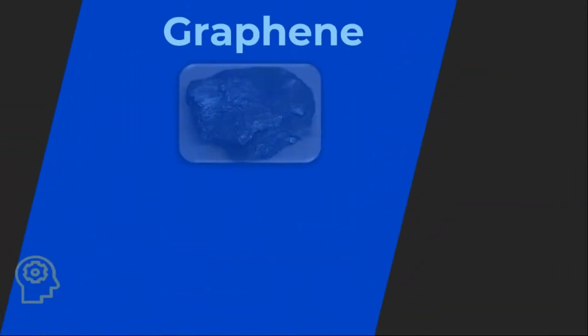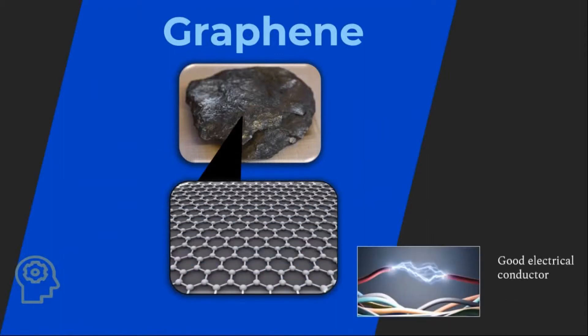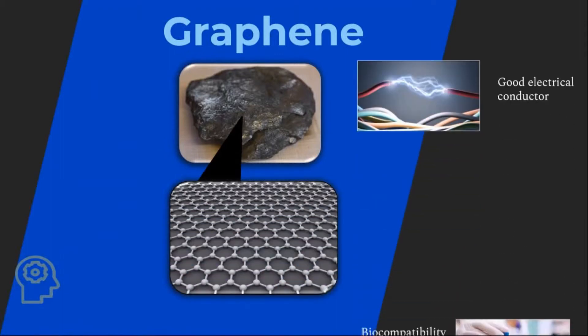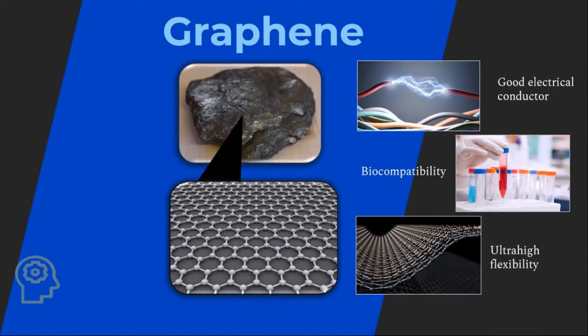Graphene is formed by carbon atomic hybridization and able to act as a biosensing material. It is good in conducting electricity, biocompatibility, and ultra-high flexibility.